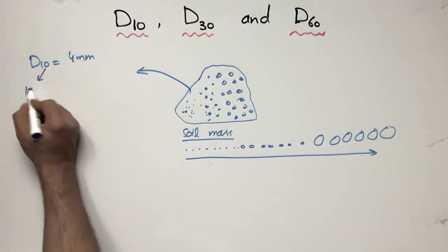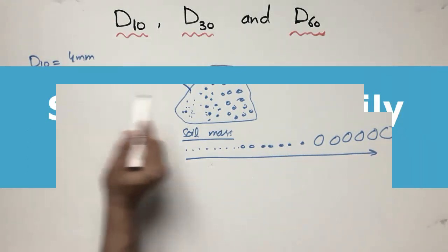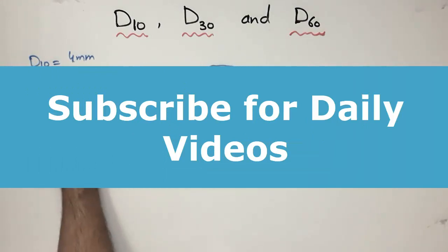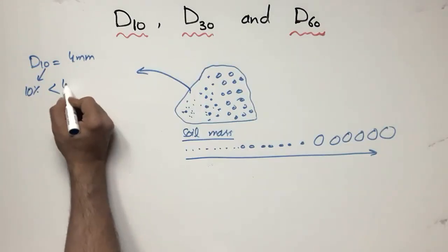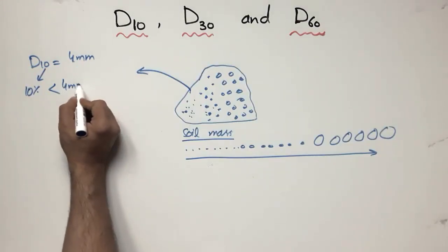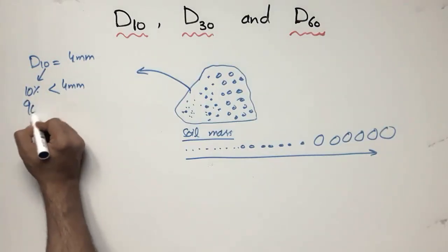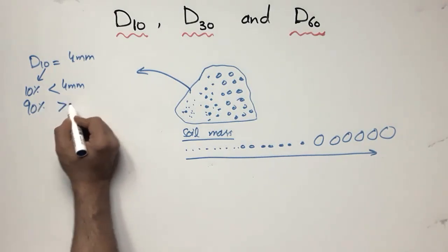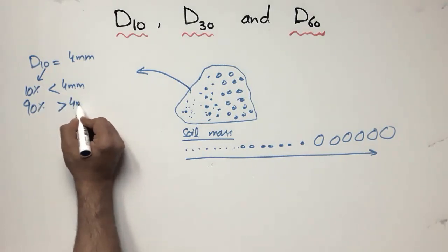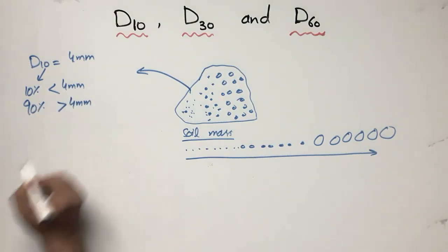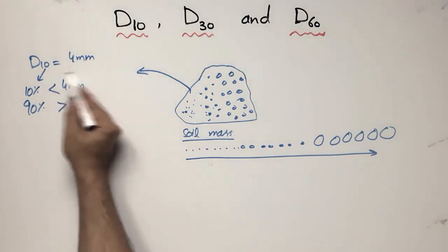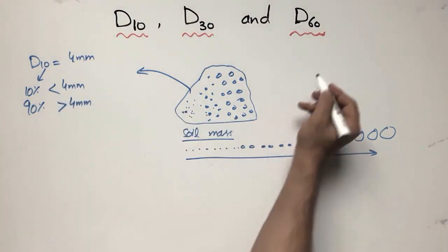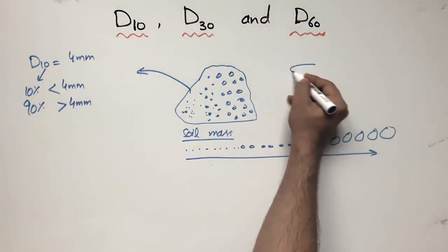D10 equals 4 millimeters means that 10 percent of the soil mass particles are smaller than 4 millimeters in size, while the remaining 90 percent of particles are greater than 4 millimeters.